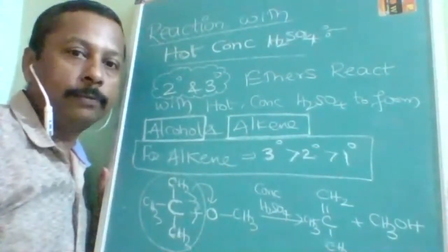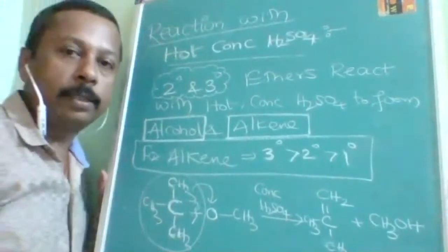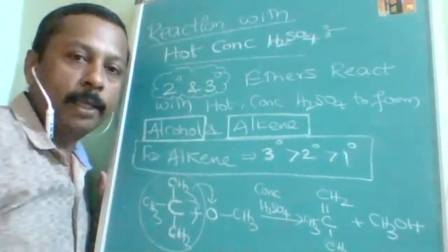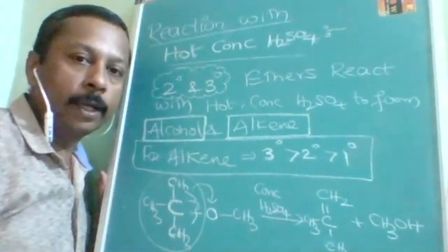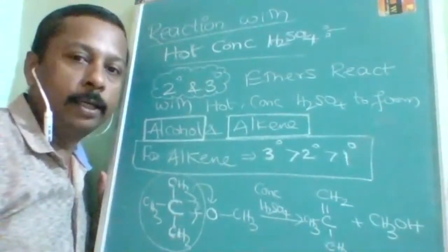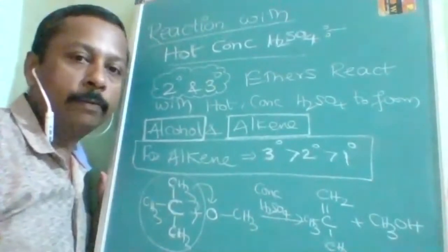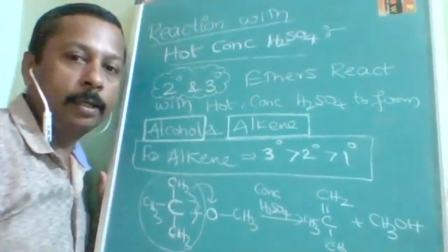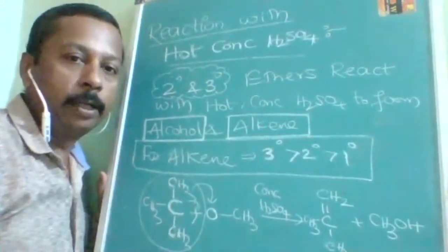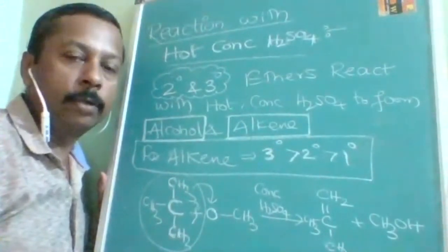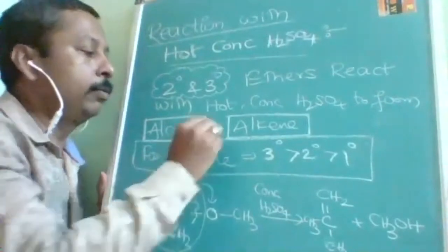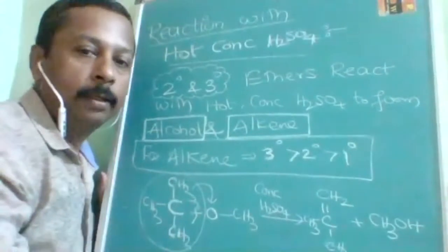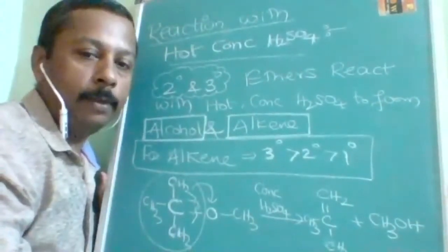To summarize: hot and concentrated sulfuric acid reacts with 2° and 3° ethers to give the higher-degree alkyl group as alkene and the lower-degree alkyl group as alcohol — giving a mixture of two products: alcohol and alkene.